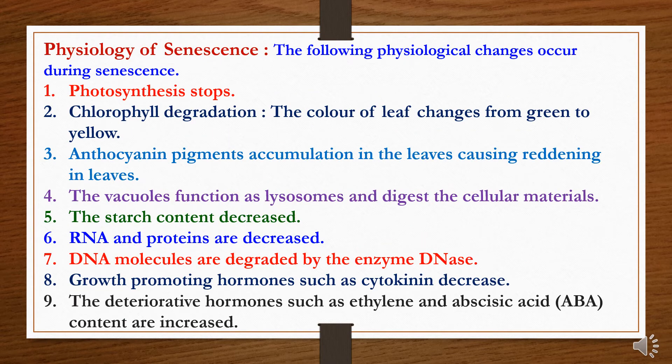We will now study about the physiology of senescence. The following physiological changes occur during senescence. First, photosynthesis stops. Second, chlorophyll degradation occurs — the color of leaves changes from green to yellow. Third, anthocyanin pigments accumulate in the leaves, causing reddening of leaves. Fourth, the vacuoles function as lysosomes and digest the cellular material. Fifth, the starch content decreases.